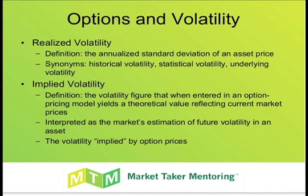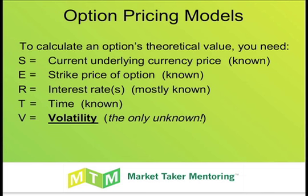You may have heard of the Black-Scholes model or perhaps the binomial pricing model — there are a good handful of them out there. Black-Scholes is arguably the first and most well-known. Here's how they work: there are five inputs that go into your option pricing model — the current underlying currency price, the strike price of the option, interest rates (for currencies, you'll enter two interest rates).